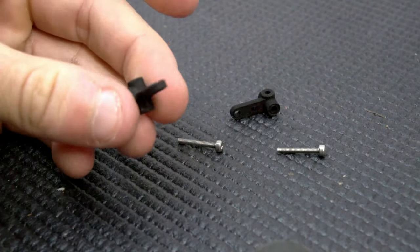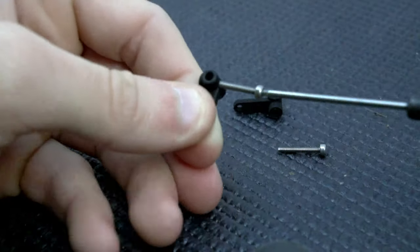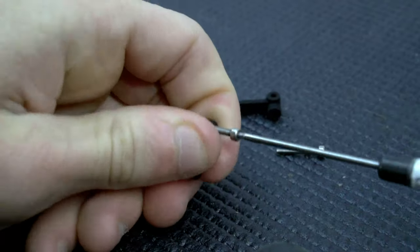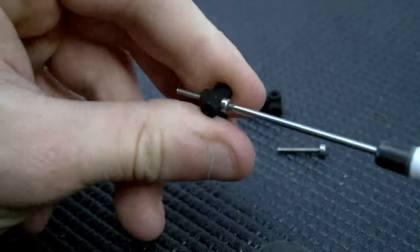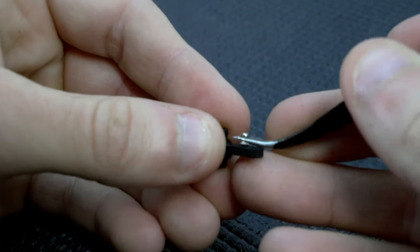We can then move on to the front steering. The front steering blocks need to be put together. You'll need two M2 by 16mm screws that get threaded into the side of the blocks.